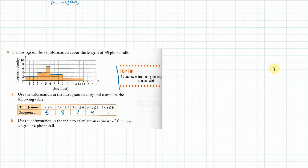To estimate the mean, we use mid-interval values. So we have 1.5, then 4, then 5.5, then 7.5 (frequency density of 3), and then 11.5 (frequency density of 5). Those are your mid-interval values.